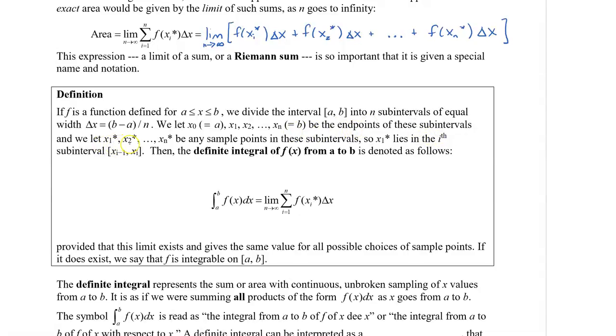And then we're going to let x1 star, x2 star, all the way to xn star, be any sample points in these subintervals. So what that means is that the star, so let's say x1 star, this lies in the ith subinterval where it is x sub i minus 1 to x sub i. So that means that we're picking a point in this rectangle that will represent the place, I guess you can call it, where we're going to find the height of that rectangle.